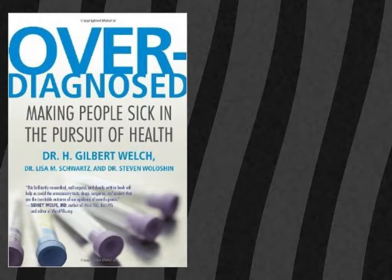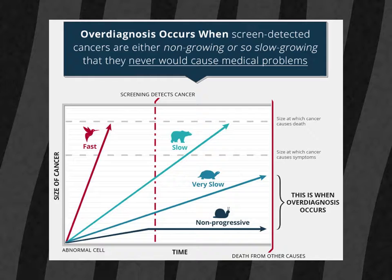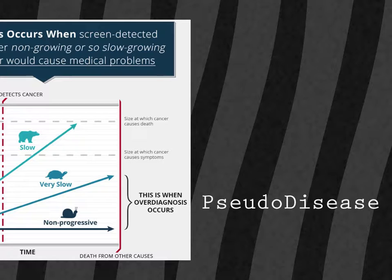There are many kinds of overdiagnosis. One is when we expand the definition of a disease to include non-clinically relevant forms, whether that be by shifting the diagnosis from a clinical definition to a laboratory one, or by making the diagnostic criteria more sensitive. Either way, this is probably best referred to as pseudodisease — a patient has a disease by definition, even though they have none of the prognostic significance normally associated with that disease.